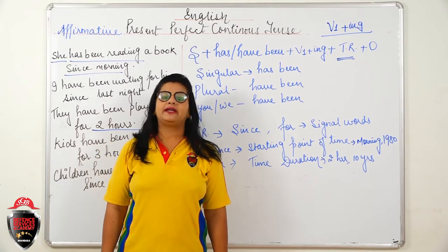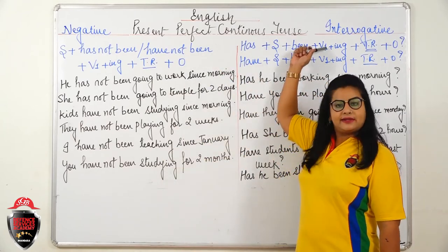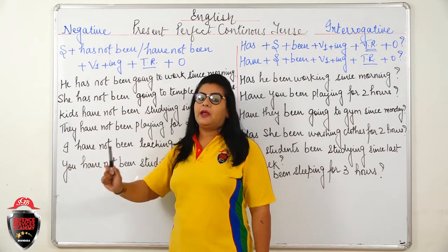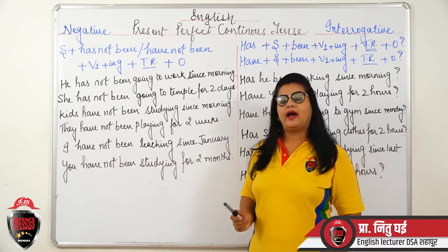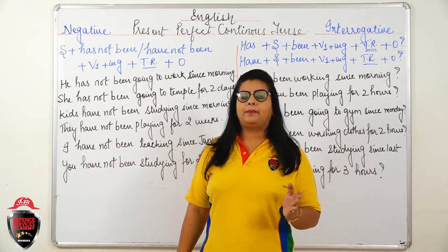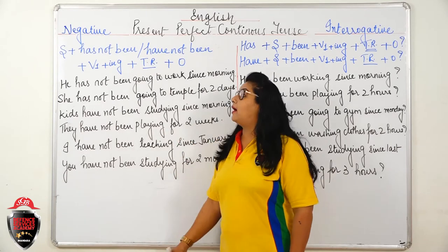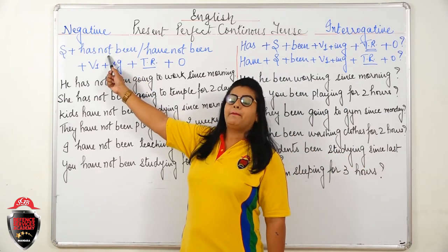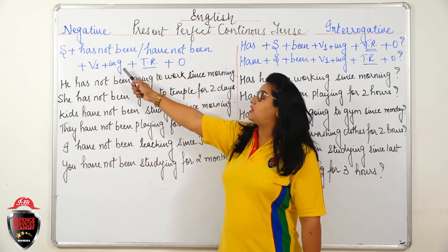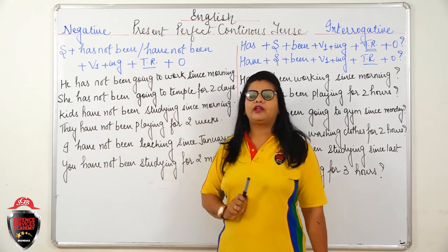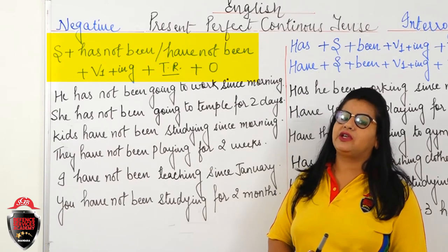Now we will do negative sentences in Present Perfect Continuous Tense. In negative sentences, 'not' comes after the helping verb — do not, does not, am not, are not, has not. Same rule applies here: has not, and since this is continuous, we need V1 ING, and before V1 ING we need 'been.' So the formula becomes: Subject plus has not been plus V1 ING plus object. Has not with singular, have not with plural.